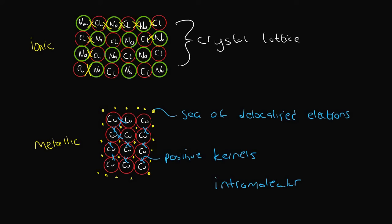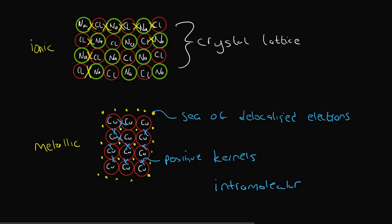And so ionic and metallic substances have very high boiling and melting points. And Kevin, how are we supposed to know if it's ionic or metallic? Ah, good question.